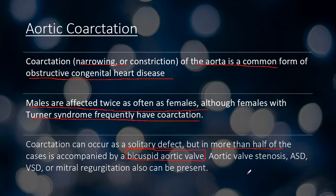Remember the aortic valve normally has three cusps — the classic Mercedes-Benz appearance. But in the bicuspid aortic valve, there is one large cusp and one smaller cusp, and within the larger cusp there will be a midline raphe showing the incomplete separation of the cusps. These bicuspid aortic valves are more prone to stenosis due to calcification. Aortic valve stenosis, atrial septal defect, VSD, or mitral regurgitation can also be present.